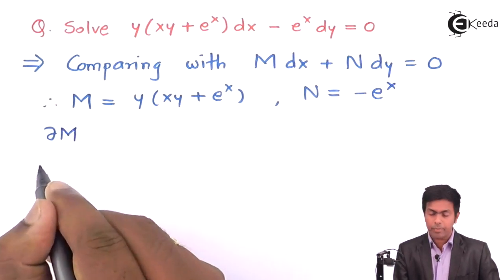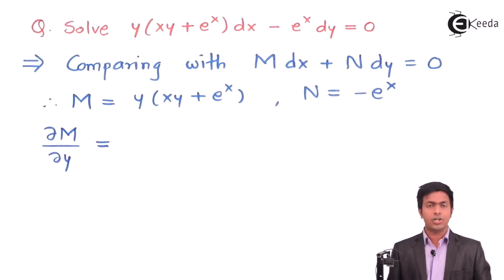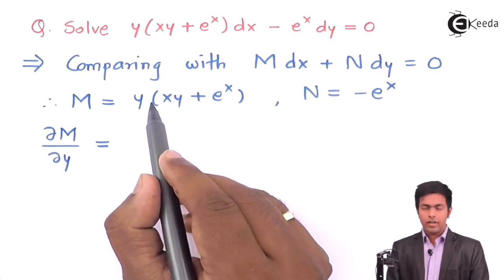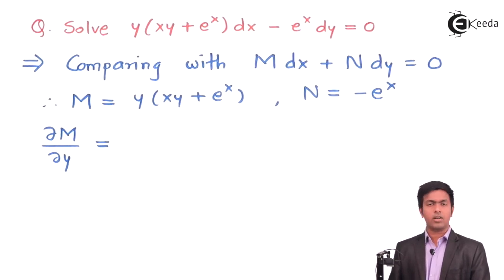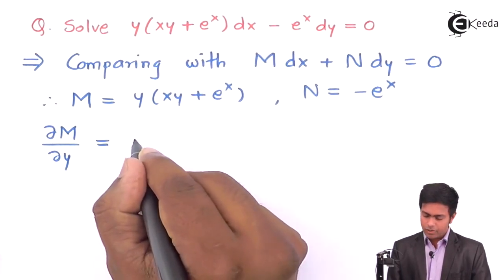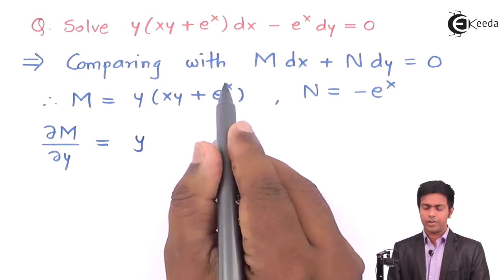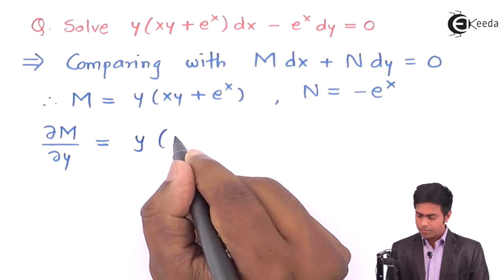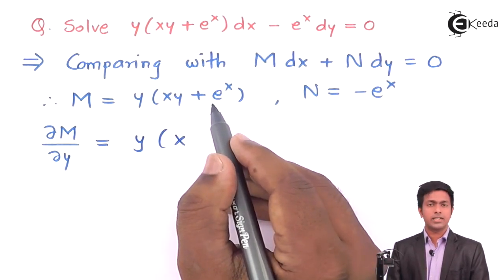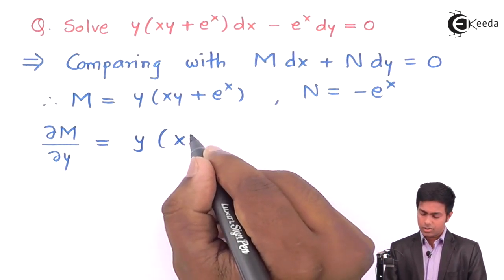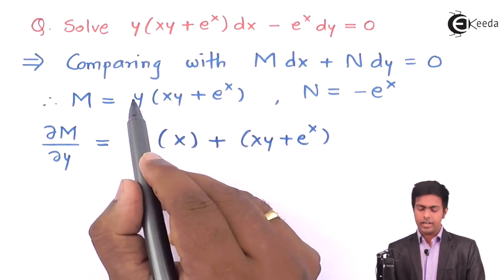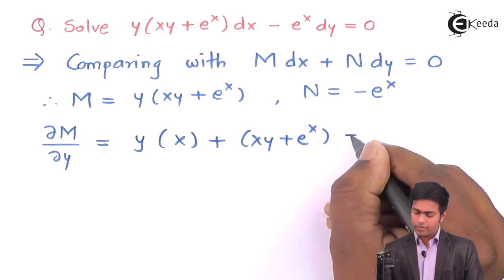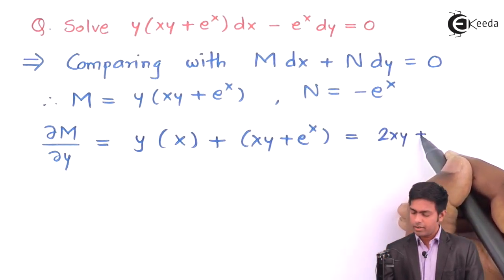Now let's find ∂M/∂y and ∂N/∂x. ∂M/∂y is the partial differentiation of M with respect to y, treating x as constant. Both terms contain y, so we use the product (uv) rule. Writing y as is and differentiating the remaining term gives x; for e^x we get 0. Then adding xy + e^x times the derivative of y with respect to y, which is 1, we get 2xy + e^x.